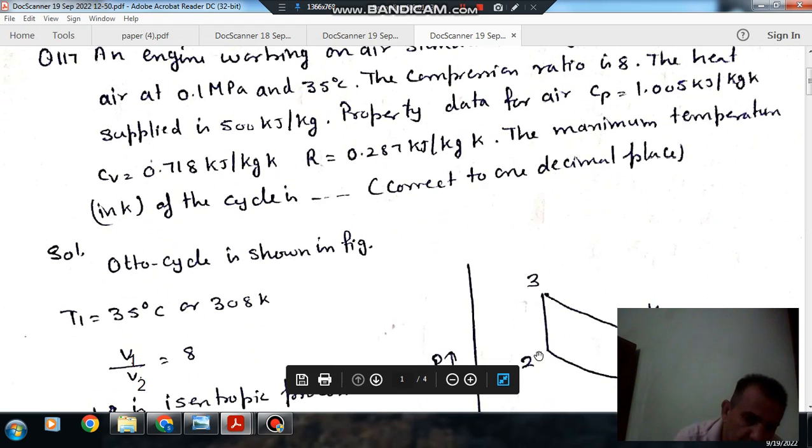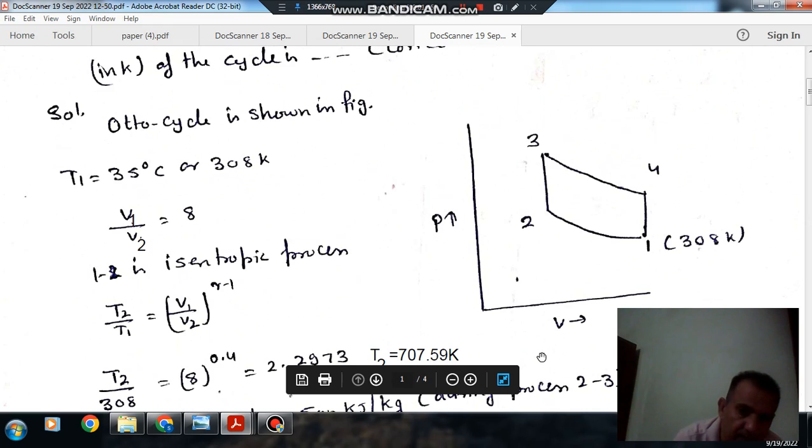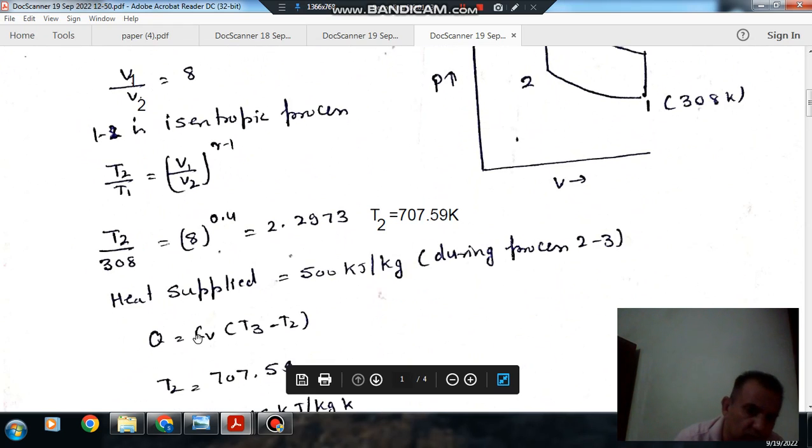So T2 is your 707.59 and heat is supplied during this process 2 to 3 and it is supplied at constant volume. So heat supplied is Q is equal to cv times T3 minus T2.